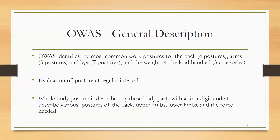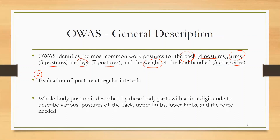In OWAS, we have four postures for the back, three postures for arms, and seven postures for legs. So we focus on three body parts — back, arms, and legs — plus a fourth factor: weight, which has three categories. Evaluation of posture is done at regular intervals; observations are taken in series, similar to work sampling. The whole body posture is described by these body parts with a four-digit code covering the back, upper limbs, lower limbs, and force needed. For each posture observed, we assign a digit to back, arms, legs, and weight, ultimately producing a four-digit code.